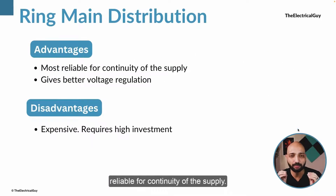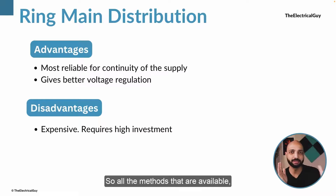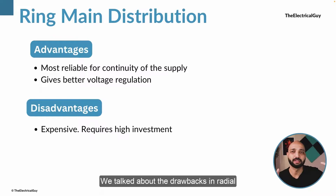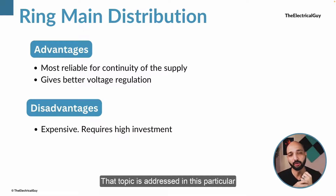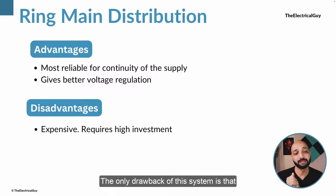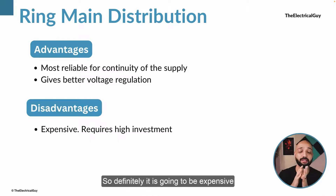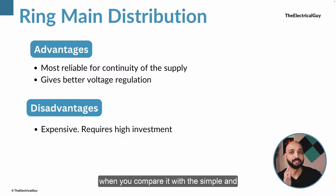The advantages of ring main distribution are that it is the most reliable method for continuity of supply and provides better voltage regulation compared to radial distribution. The only drawback is that it is very expensive and requires high maintenance, since it needs parallel feeders and ring main units — making it significantly more costly than the simple radial distribution.